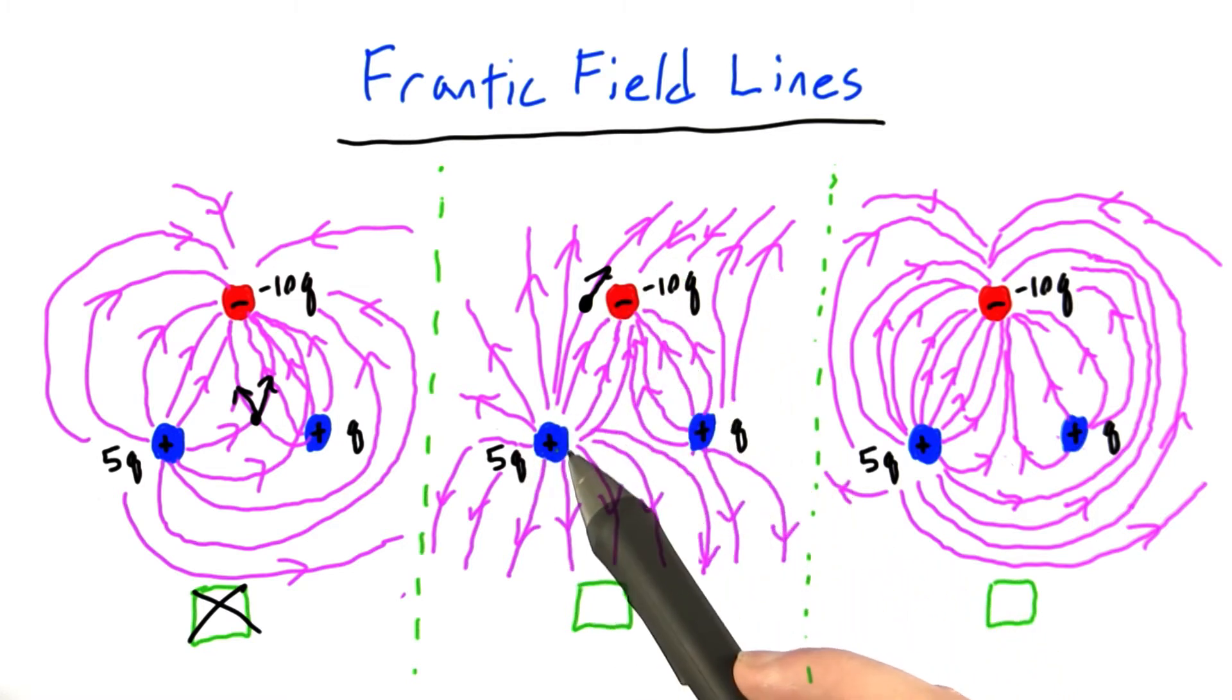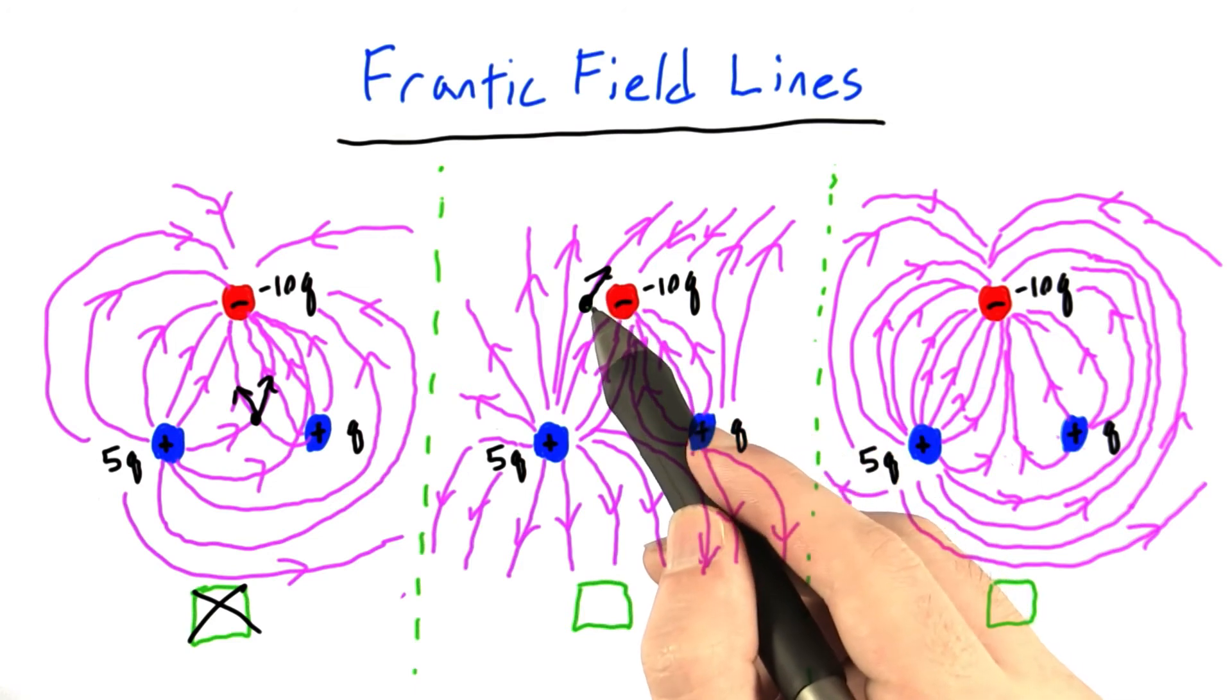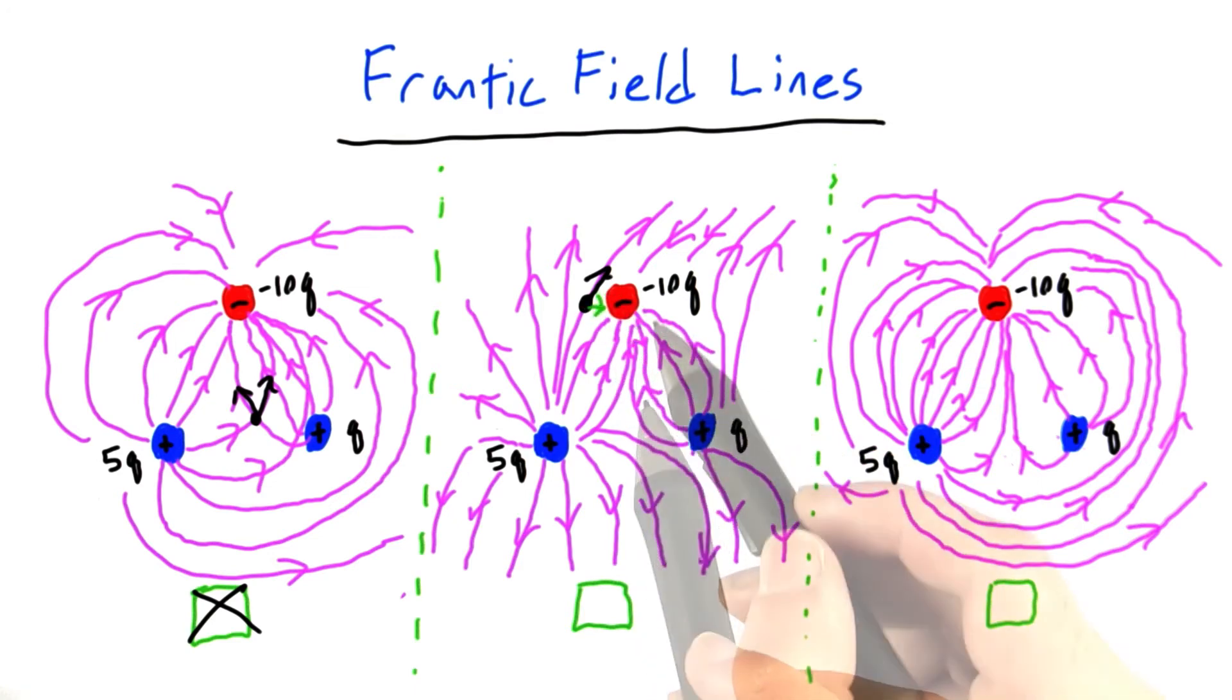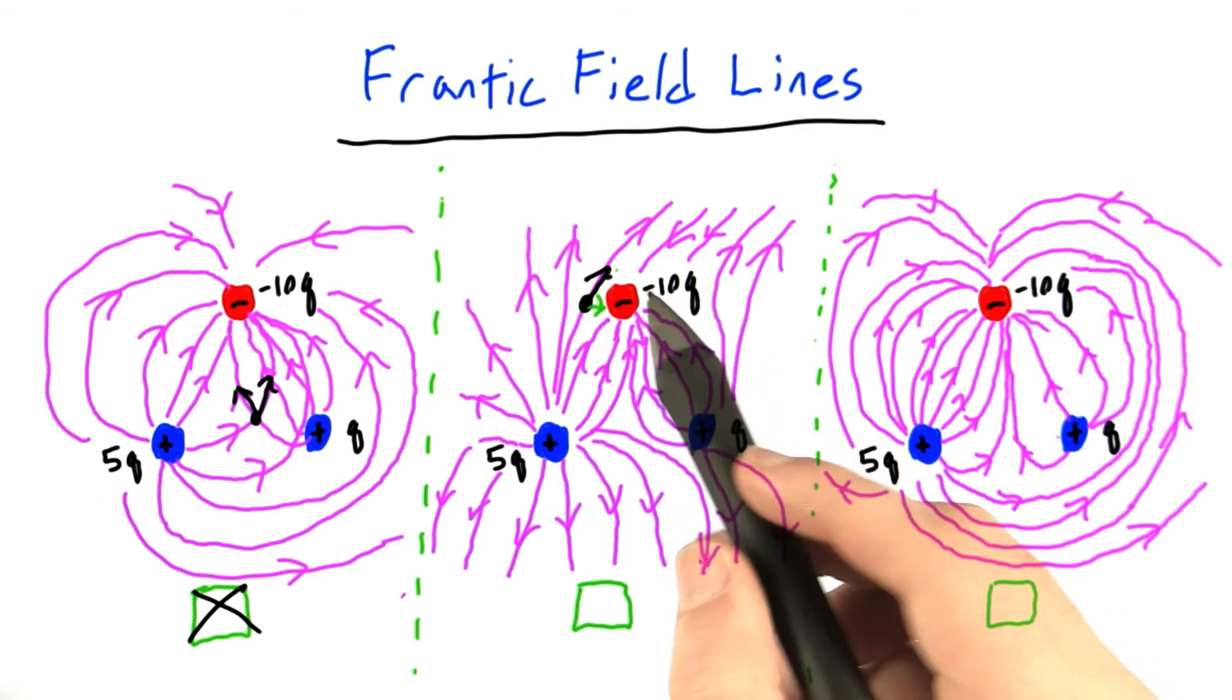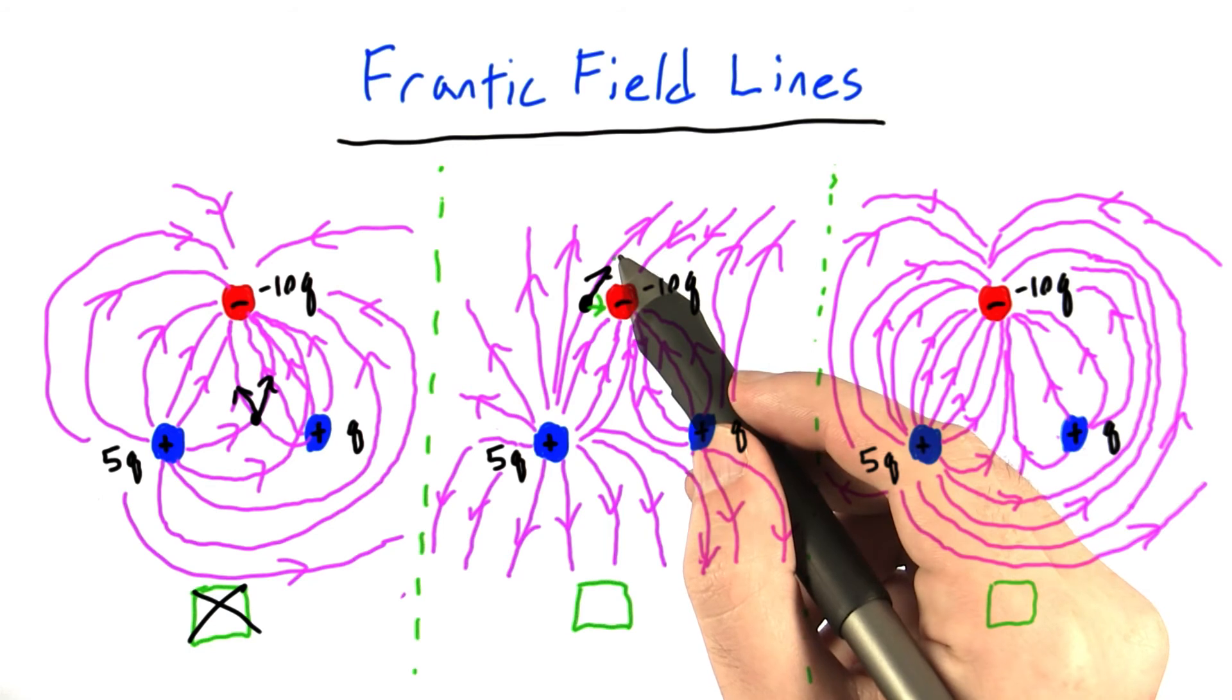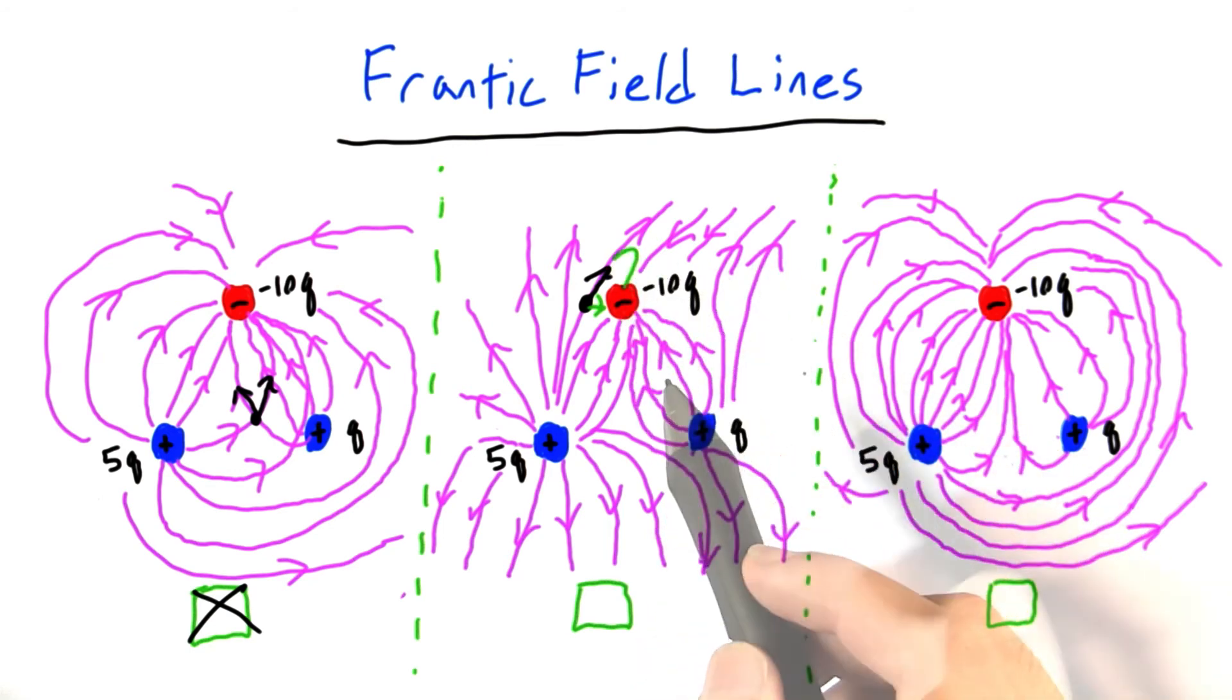And since this positive charge over here is relatively small, we'd expect this force to be more like that, pointing towards the negative charge. So because this negative charge is so big, we'd expect these lines showing how positive charges will move to bend more towards the negative charge like this. So this means this one can't be the right answer either,